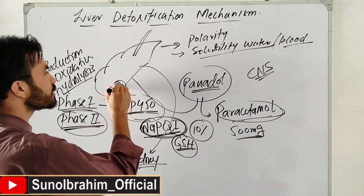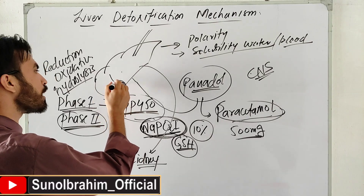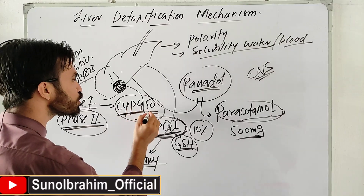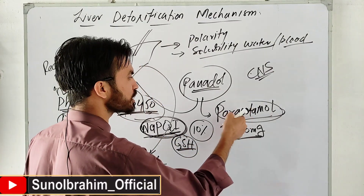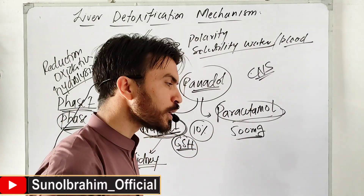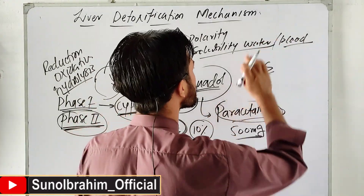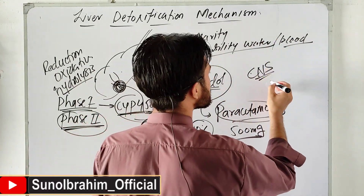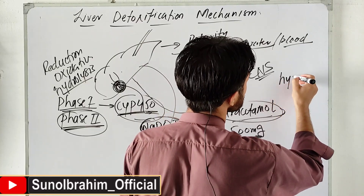After the kidneys process it, it is excreted in urine - that is how Paracetamol leaves the body. After detoxification, it travels through the blood to the CNS, specifically to the hypothalamus, which acts as a thermostat.